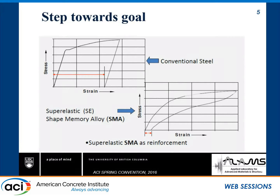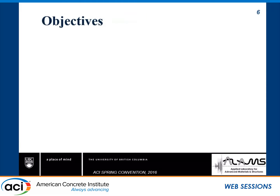Such a material is superelastic shape memory alloy. Shape memory alloy has two different forms: shape memory effect and superelasticity. With shape memory effect, after large residual strain, you can heat it up to recover the strain and it will go back to its original shape. With superelasticity, if the ambient temperature is above the austenite finish temperature, it will automatically show superelasticity — meaning you don't have to apply additional heat to recover your residual strain.